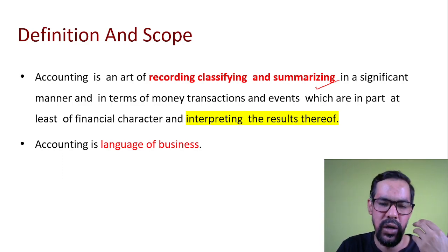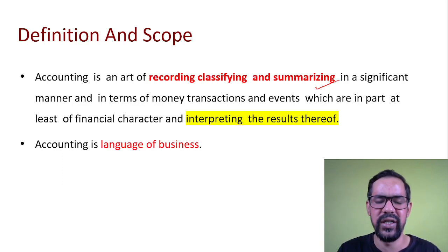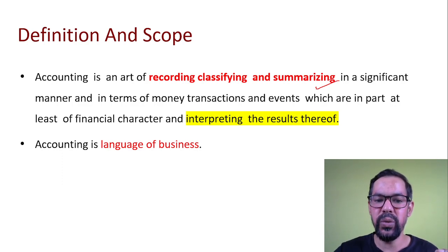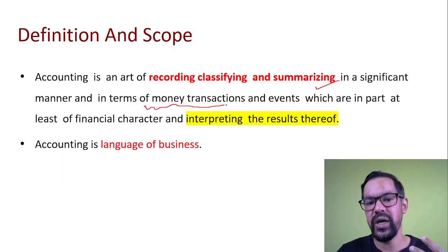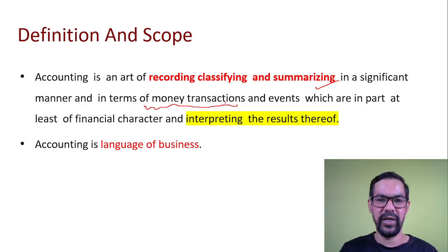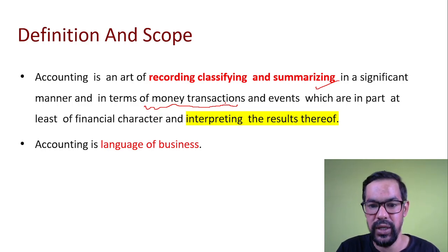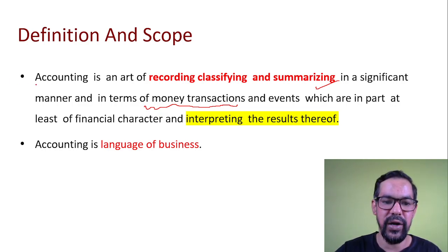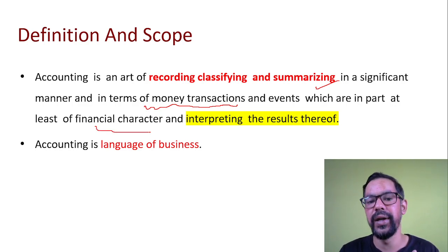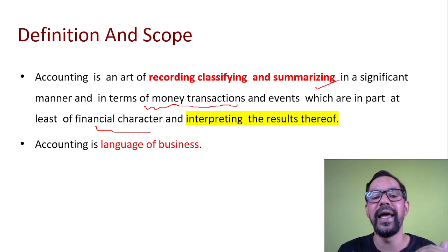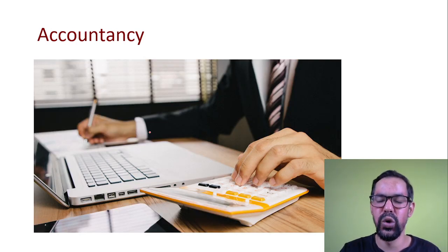Companies have to maintain their data — balance sheets, bank reconciliation statements, and different kinds of reports — and these involve money transactions only. We do not consider goodwill or the health of stakeholders; we only consider things that are generally related to money and events of a financial character. So accountancy can be summarized as the language of business.